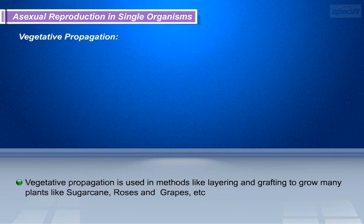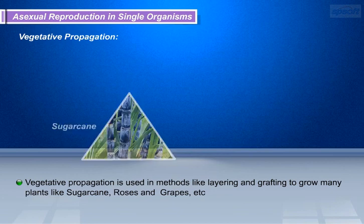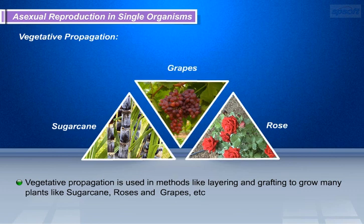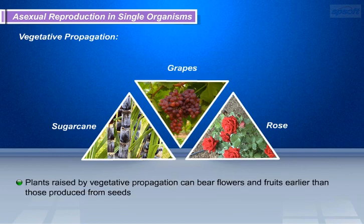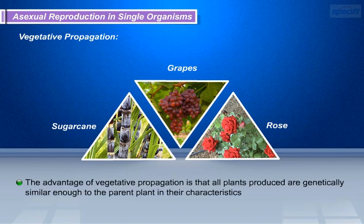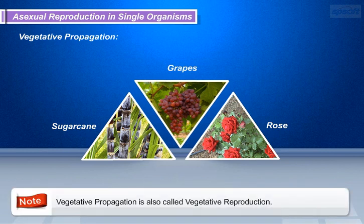Vegetative propagation is used in methods like layering and grafting to grow many plants like sugar cane, roses, and grapes. Plants raised by vegetative propagation can bear flowers and fruits earlier than those produced from seeds. The advantage of vegetative propagation is that all plants produced are genetically similar to the parent plants in their characteristics. Note that vegetative propagation is also called vegetative reproduction.